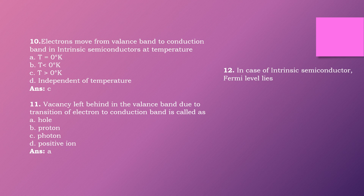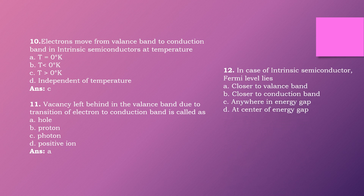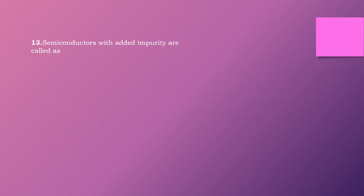Question twelve: In case of an intrinsic semiconductor, the Fermi level lies dash. Options are: closer to valence band, closer to conduction band, anywhere in energy gap, at center of energy gap. The right answer is option D: at center of energy gap.